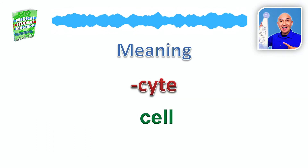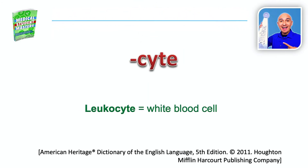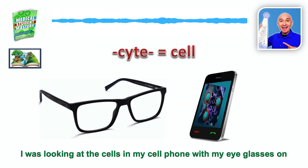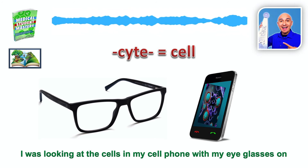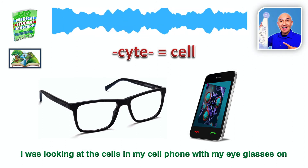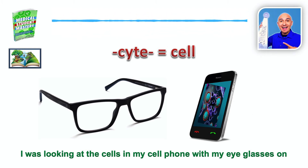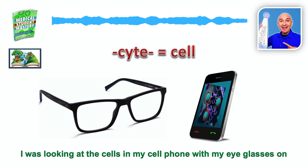The fourth suffix is -cyte, S-Y-T-E, and that means cell. My word used is leukocyte, which means white blood cell. And for -cyte, I would picture eyeglasses. And for the cell, possibly a cell phone, even a gel cell. So my story for that could be: I was looking at the cells in my cell phone inside of a gel cell with my eyeglasses for sight.